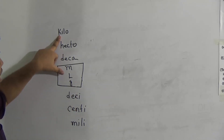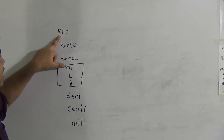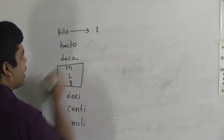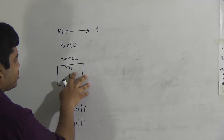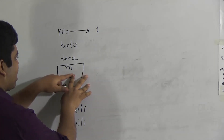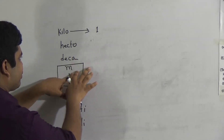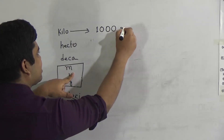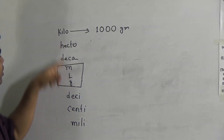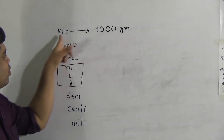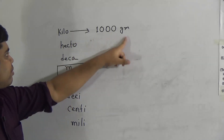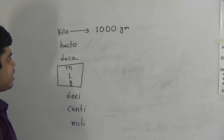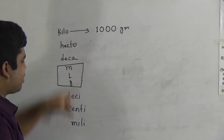How can we find 1 kilogram equal to how many grams? I write 1, and going from Kilo to Gram is 3 steps, so we write 3 zeros. Therefore 1 kilogram equals 1000 gram. Similarly, 1 kiloliter equals 1000 liter, and 1 kilometer equals 1000 meter.